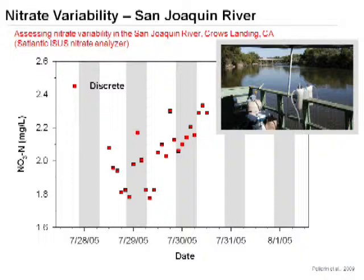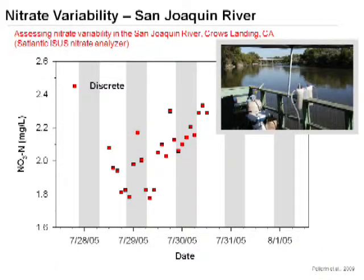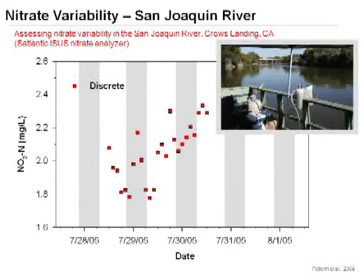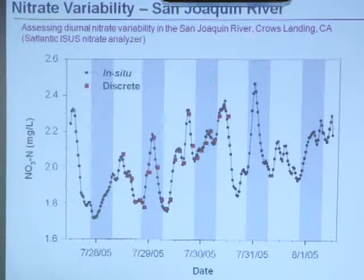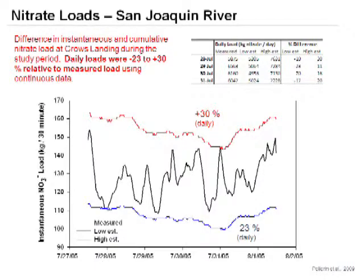We got into that a decade or so ago with this study on the San Joaquin River, well above the reach of the tides at Crow's Landing. We were interested in the high-frequency dynamics of nitrate. The white bars are day, dark bars are night, and we collected data every two hours. What you can see is a cloud of data you can't tell much from — we were collecting data too slowly. We also had a continuous in-situ nitrate analyzer running, and you can see that variations that look like a cloud are actually systematic. Depending on where you choose in the time series to calculate daily loads, you can overestimate or underestimate them by 20 to 30 percent.